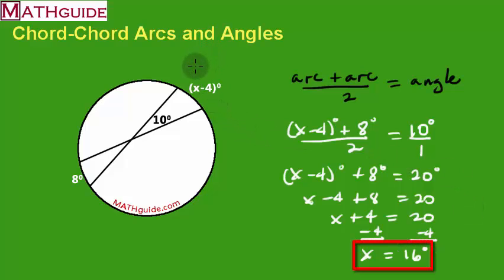And it does work. Imagine putting in 16. 16 minus 4 is equal to 12. So, we're really talking about a 12-degree arc here. So, if we look at this formula again, we would take 12 plus 8 divided by 2, got to be equal to 10.